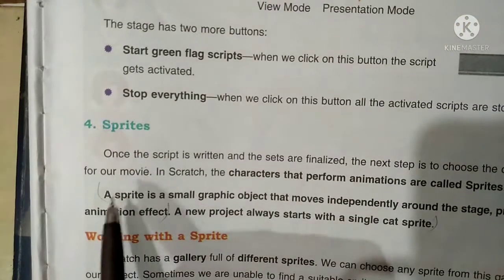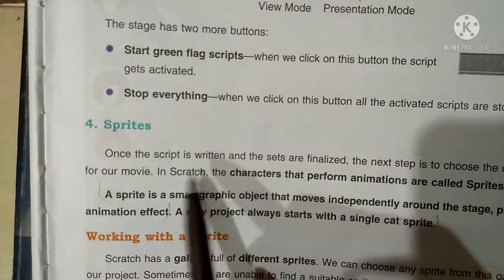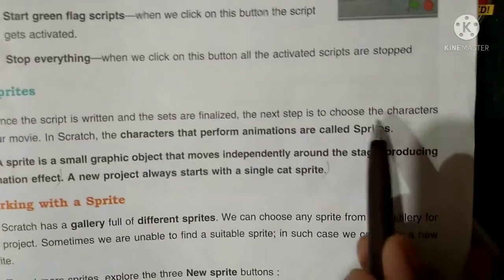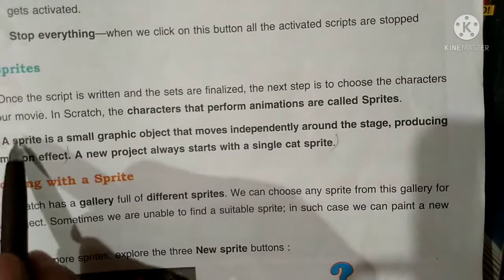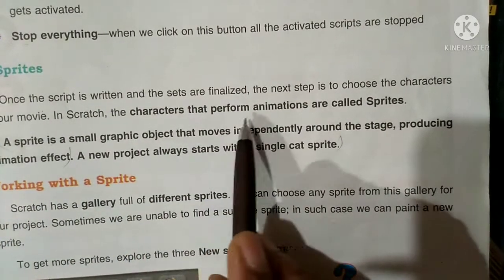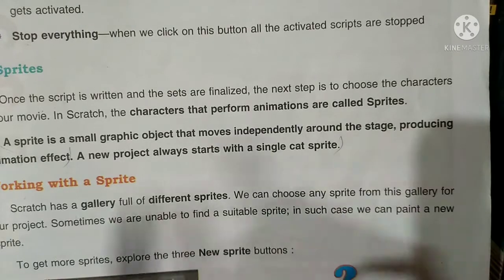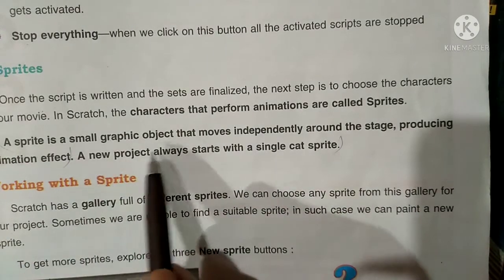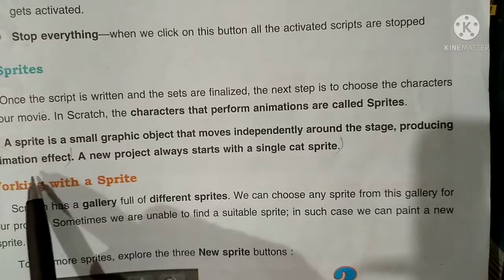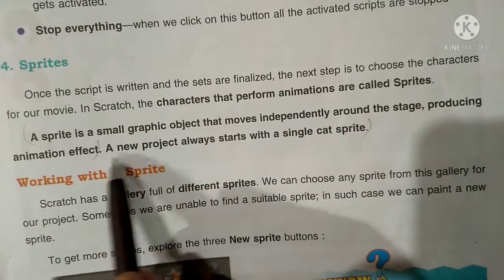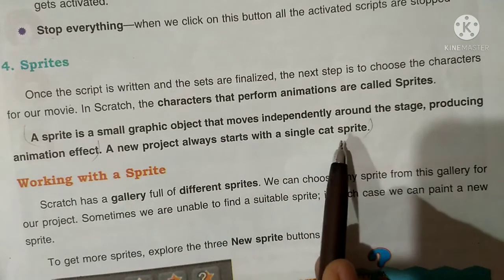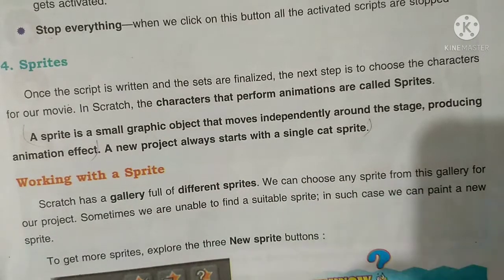Now, sprites. Once the script is written and the sets are finalized, the next step is to choose the characters for the movie. In Scratch, the characters that perform animation are called sprites. A sprite is a small graphic object that moves independently around the stage, producing an animation effect. A new project always starts with a single cat sprite.